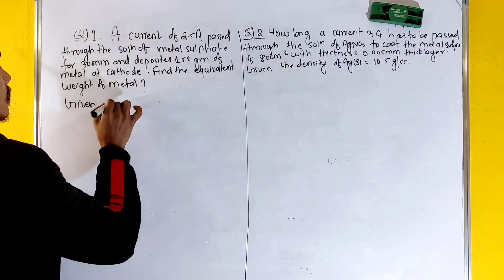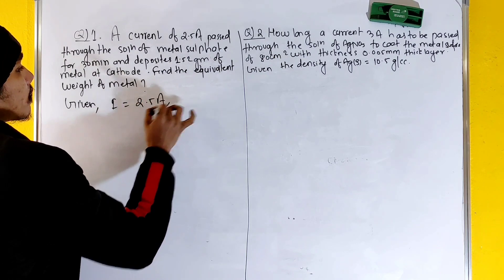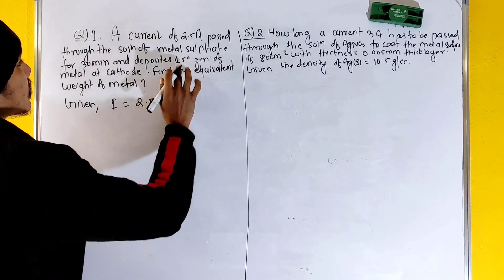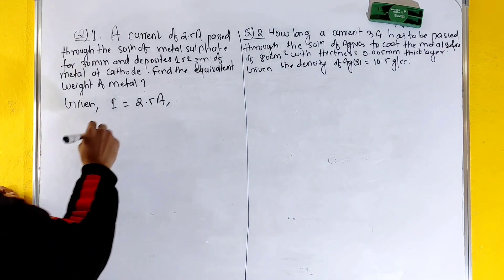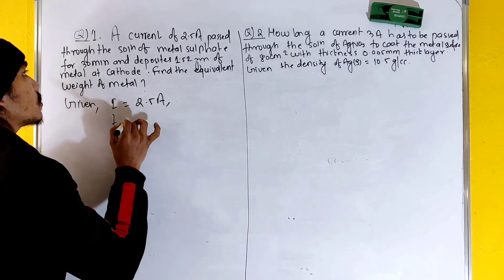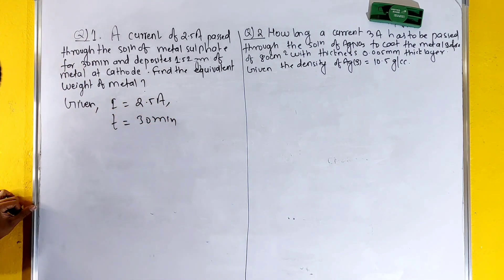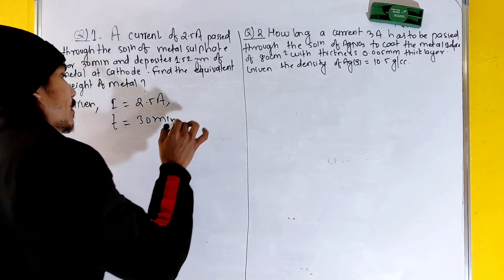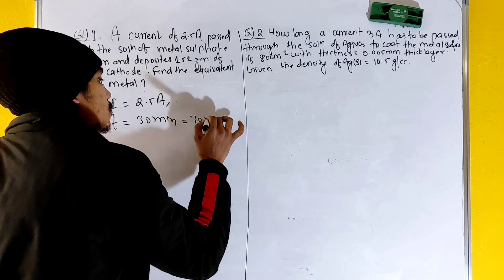Current is equal to 2.5 ampere. Time is equal to 30 minutes. We convert time to seconds: time is equal to 30 into 60 seconds.